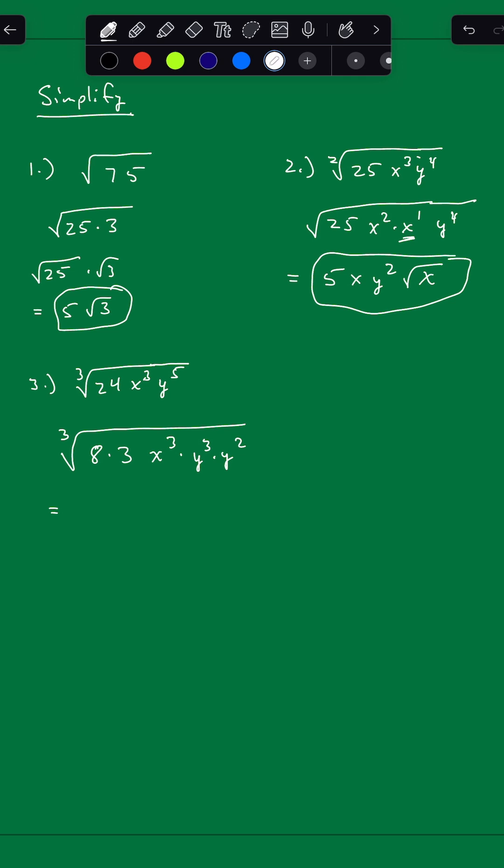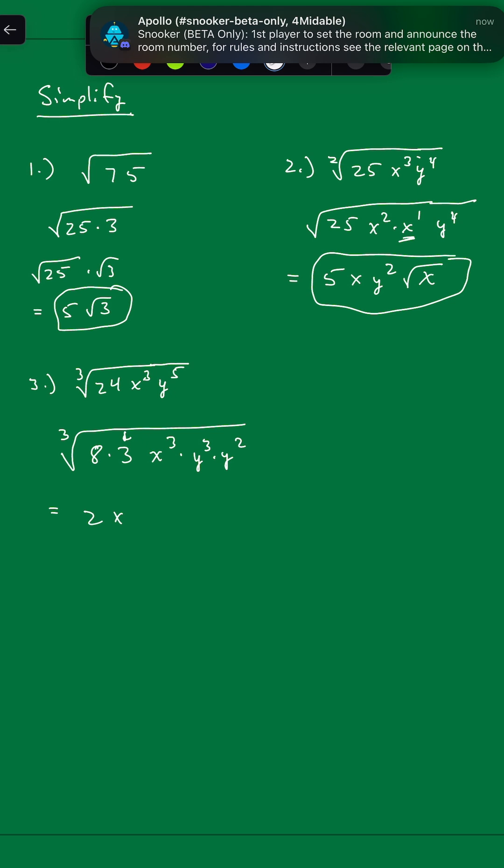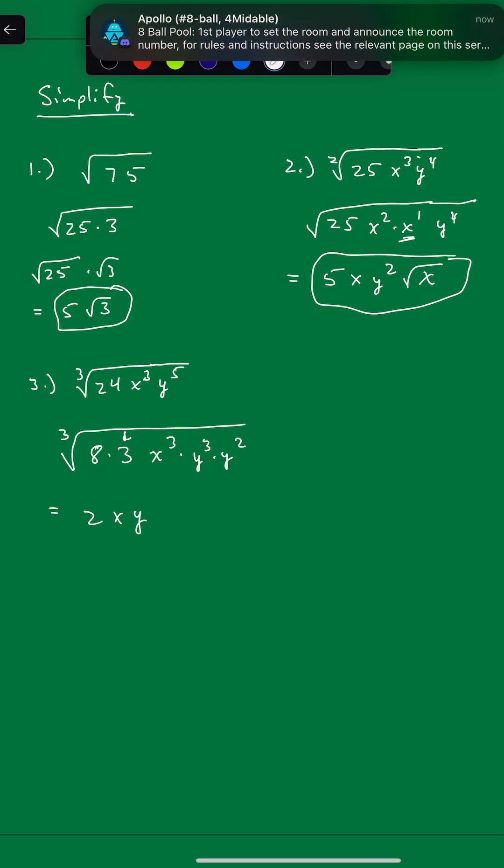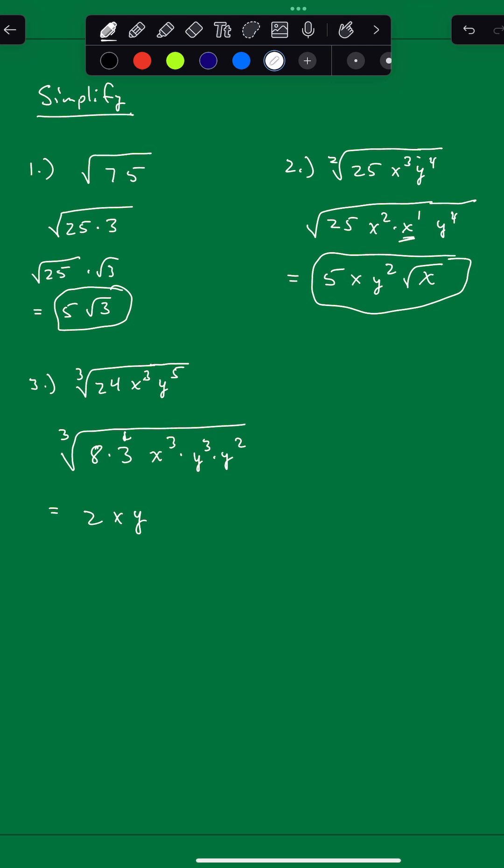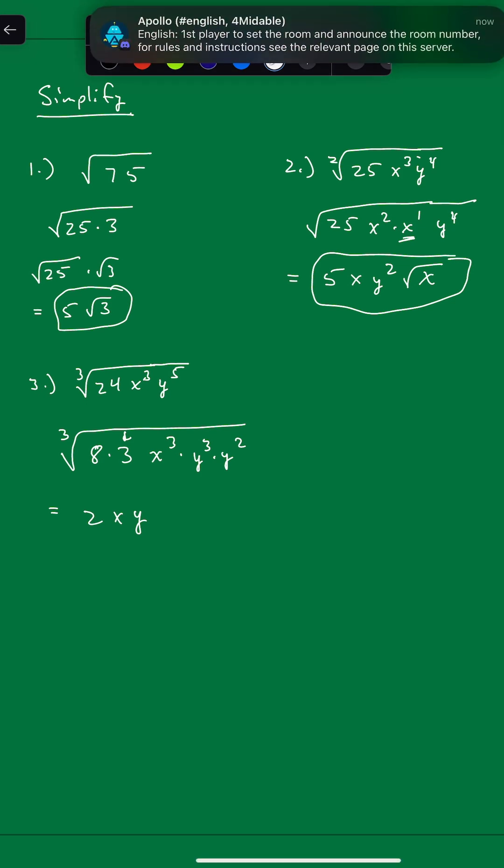So now we've got the cube root of 8 is 2. 3 is not a perfect cube, so it's going to stay. Now for the x cubed, 3 goes into 3 one time, so that's x to the 1st, y cubed. 3 goes into 3 one time, so that's going to be y.